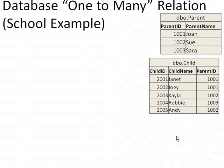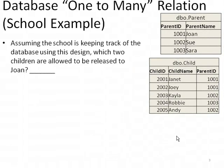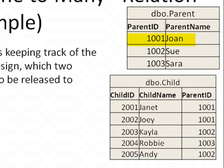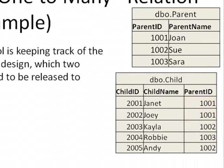This allows us to answer such questions. Assuming the school is keeping track of the database using this design, which two children are allowed to be released to Joan? Joan is parent ID 1001. So we scan the child table and we see two entries. This tells us that Janet and Joey belong to Joan.